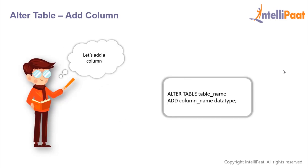Now let's have a look at the syntax to add a column to an existing table. We'll start by giving the keywords ALTER TABLE, then we'll give the name of the table. After that we'll give the ADD keyword and the name of the column which you want to add, and finally we have to assign a data type to this new column.